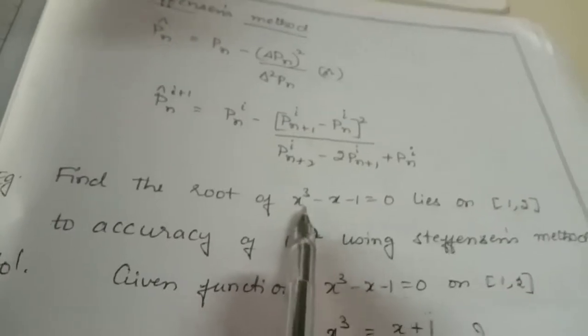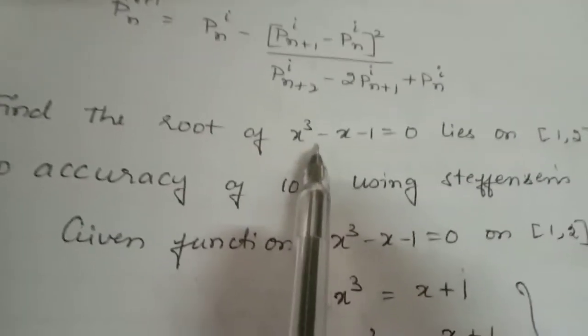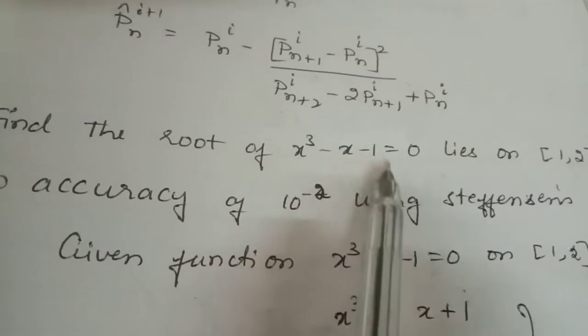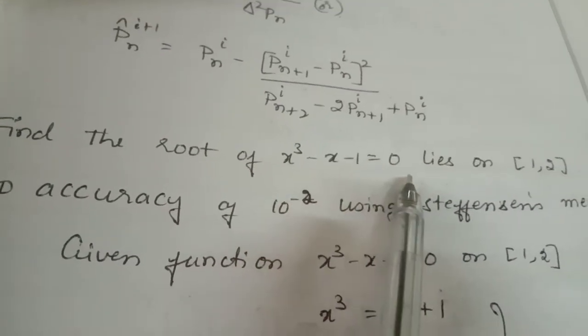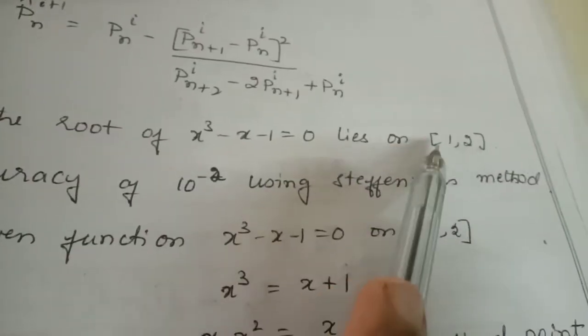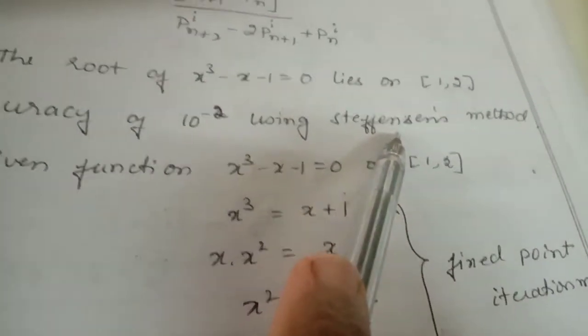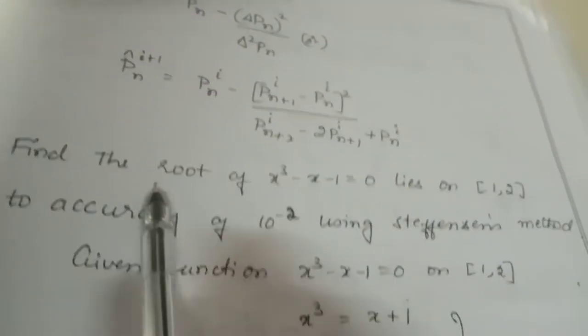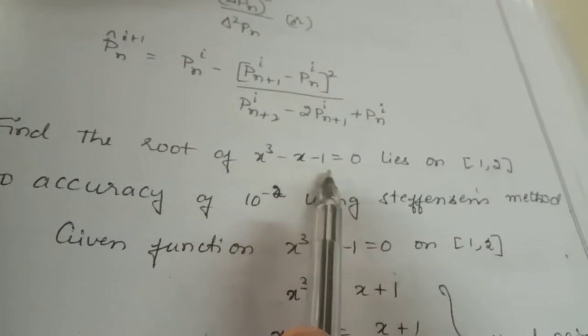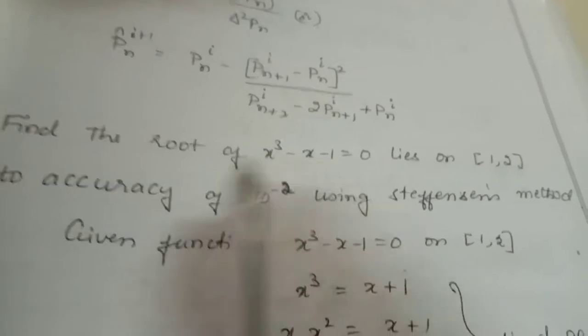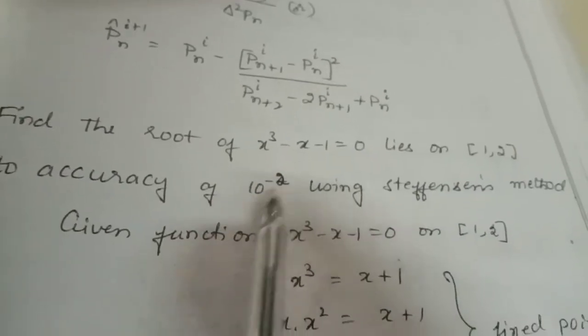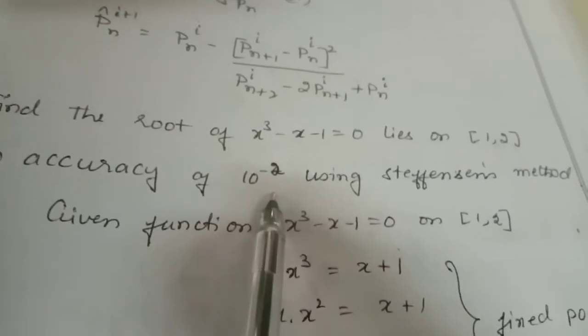Here they are asking to find the root of x³ − x − 1 = 0, which lies on the closed interval [1, 2]. Using the Steffensen method, they are asking to find the root of this equation up to accuracy 10⁻².